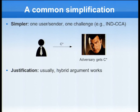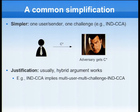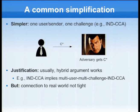The justification why we look at this simplified setting and not the whole deal with a bunch of public keys and a bunch of ciphertexts is that usually we can say that a hybrid argument works. What this means is that if we have one challenge setting and one user setting, then usually we can argue that in a larger setting, the scheme enjoys the same security properties. So even an adversary that gets many ciphertexts won't derive any reasonable information about any encrypted message. So this has several drawbacks.